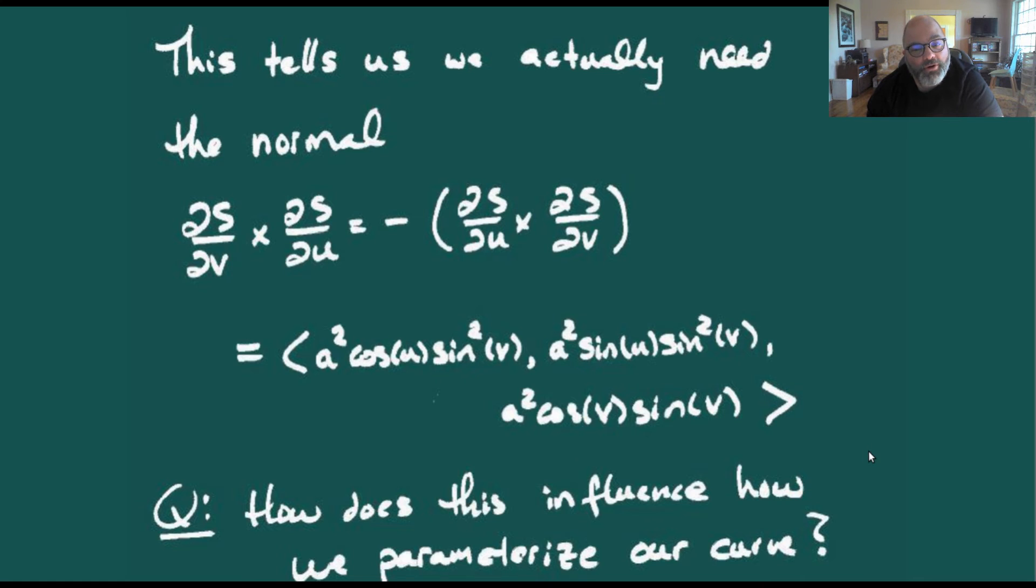An important part of Stokes' Theorem is having the correct parameterization for our curve with the positive orientation. A natural question is: how does this normal influence how we parameterize our curve?